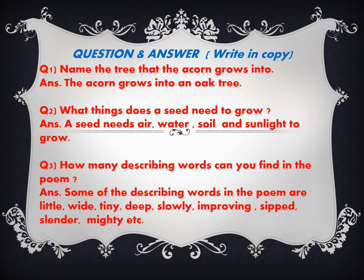Write these question answers in your notebook. Question one: Name the tree that the acorn grows into. We already read the poem 'Little by Little' — the acorn grows into an oak tree. Question two: What things does a seed need to grow? A seed needs air, water, soil, and sunlight to grow.